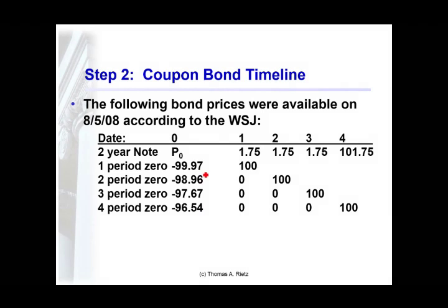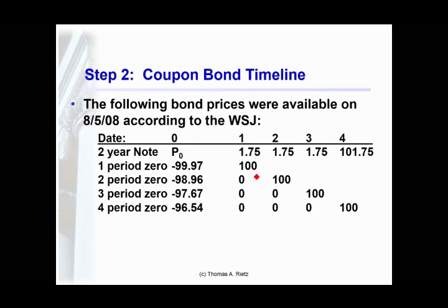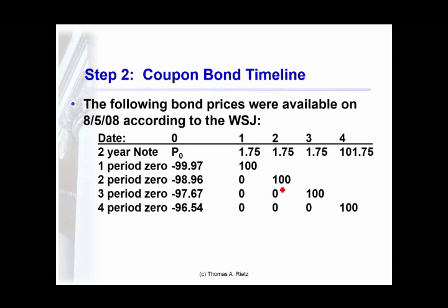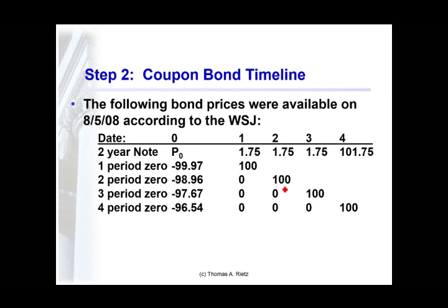The idea is it costs you $99.97 to buy $100 in a year. Or put differently, it costs you $0.9997 to buy a dollar in a year. What I'd like to buy is $1.75 in a year — the cash flow on my coupon bond. Same thing in two periods from now: $98.96 is $100, $0.9896 is the value of $1.00, and I want to find the value of $1.75.